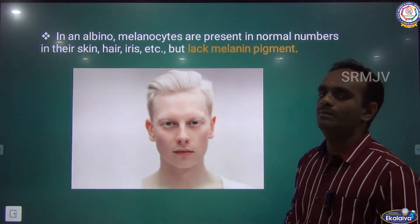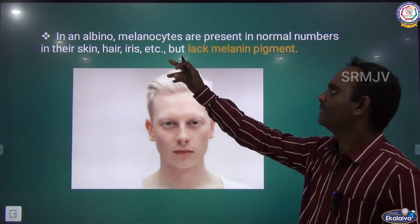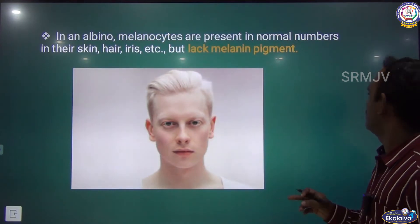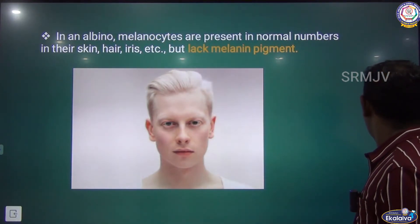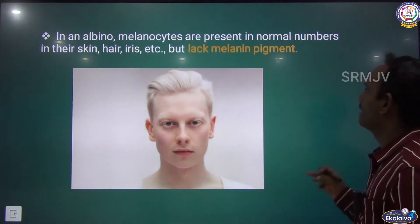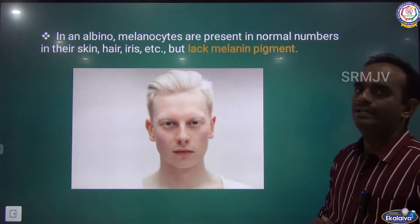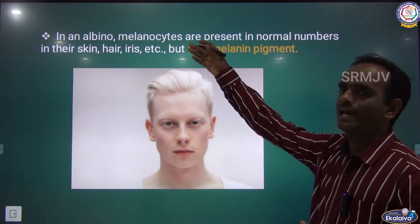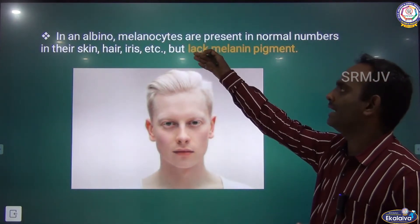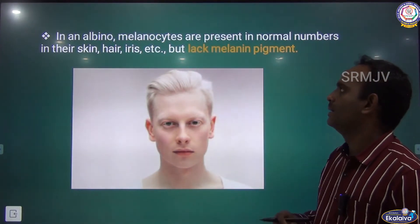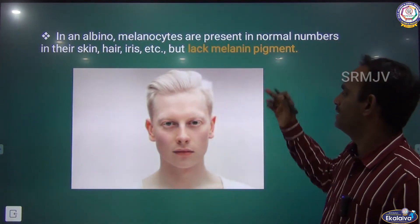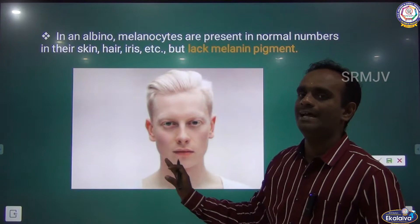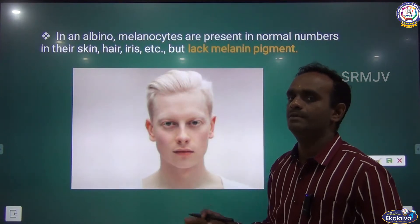In albinism, melanocytes are present in normal numbers in the skin, hair, and iris, but they lack melanin pigment. See the picture of albinism.